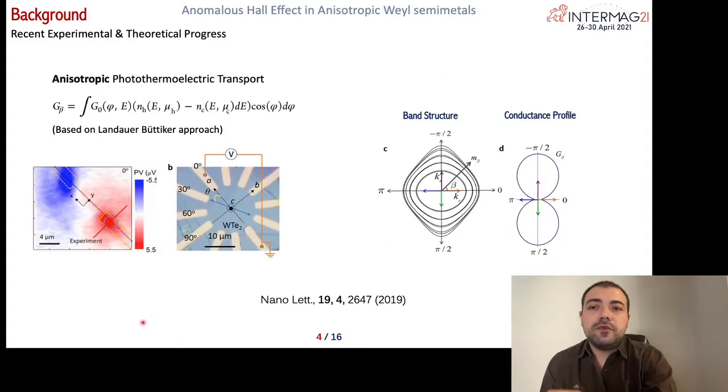Also, we previously observed the effect of the anisotropy experimentally as well. This is scanning laser mapping of tungsten ditelluride nanoflake with circular electrode geometry like this. This experiment shows that photothermoelectric transport is highly anisotropic in tungsten ditelluride and the experimental result was very consistent with our calculations based on calculated band structure shown in this figure.